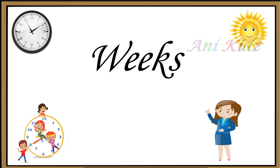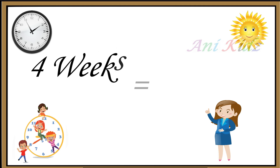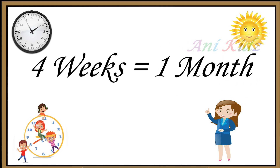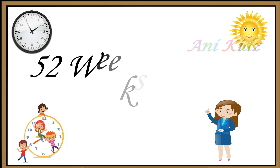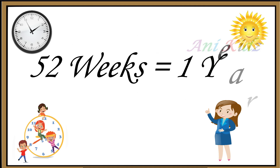And the next bigger unit is weeks. Four weeks is equal to one month. Fifty-two weeks is equal to one year. That is, for the whole year we have 52 weeks.